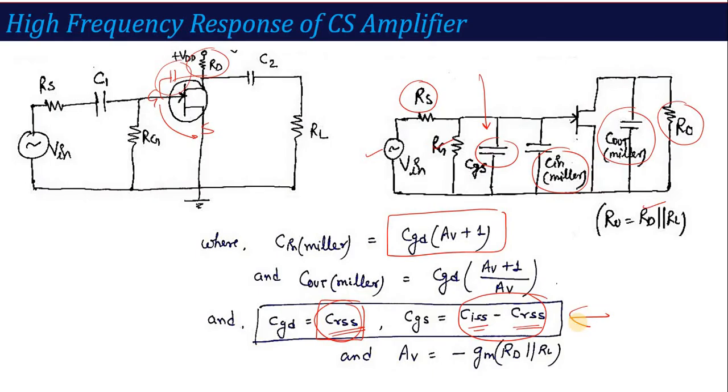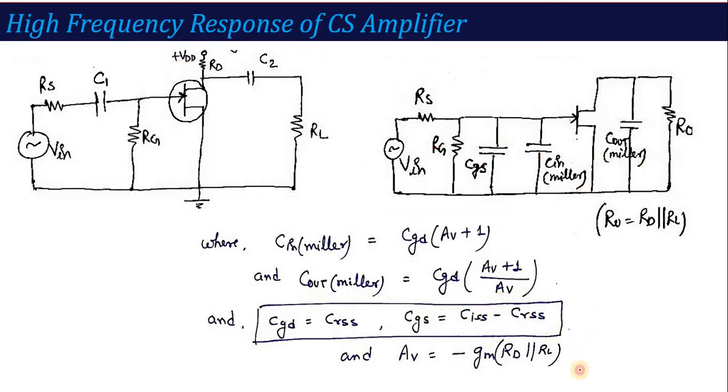What is the value of voltage gain? The voltage gain formula we have already derived: that is minus g_m times r_d parallel with R_L. We have done this formula in the previous lecture, so I have picked up the voltage gain formula.